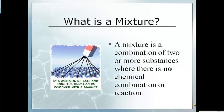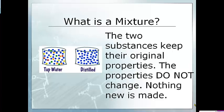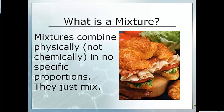A mixture is when you combine two or more substances, but there's no chemical reaction or combination that happens. You take two or more different substances and put them together, but you do not chemically bond them — they're only physically put together. Nothing new is made. The two substances keep their original properties. Mixtures combine things physically, not chemically, in no specific proportions. Things are just mixed together but don't chemically bond to make anything new.